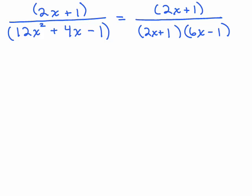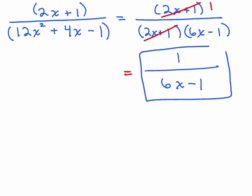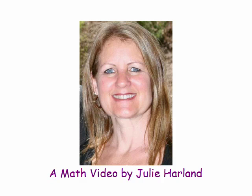So we cancel the 2x plus 1s, and here's the very important part. The answer is not 6x minus 1. There's a 1 in the numerator. Don't forget, so it's 1 over 6x minus 1, and there you go. I hope you learned something. Remember, math is cool.